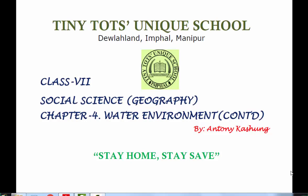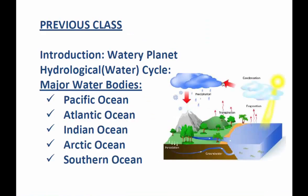Hello students, this is Anthony Koshu, your social science teacher. Today we will learn the continuation of the lesson from Chapter 4, that is Water Environment from Geography. In the previous class we have already learned why our planet Earth is known as a watery planet — it is because water is so abundant on the surface of the earth.